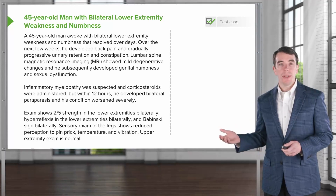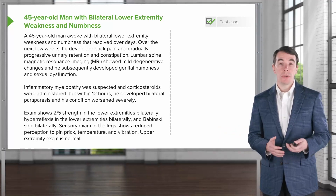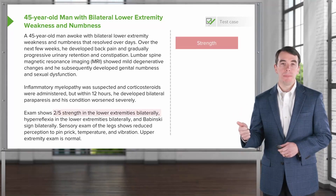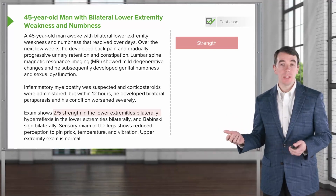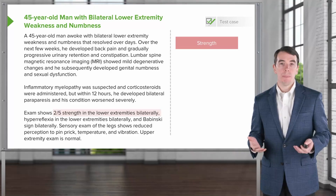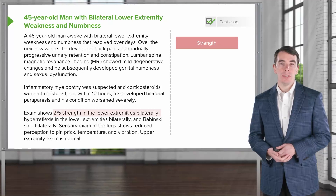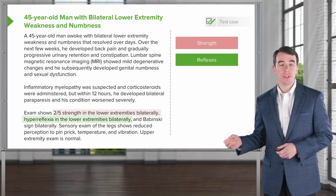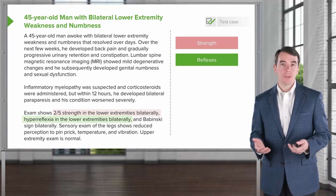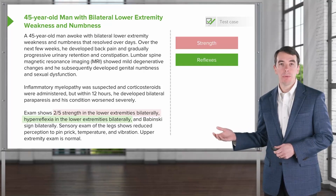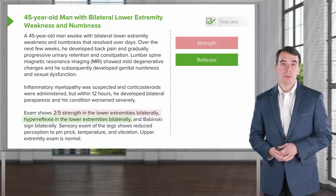Let's walk through the key features of this case that guide us to the localization. First is the strength exam: this patient has significant bilateral, relatively symmetric weakness in the legs — a paraparesis — which is strongly indicative of a spinal cord disorder. Second is the reflex exam, which is really important here. Reflexes are some of the most objective portions of our exam, and the presence of bilateral hyperreflexia points to an upper motor neuron disorder and squarely sets this in the spinal cord.